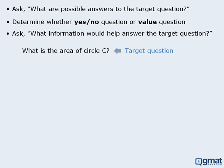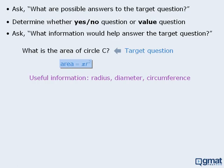Here is another example. The target question asks: what is the area of circle C? Since the formula for the area of a circle is pi r squared, where r is the circle's radius, it would be useful to know the radius of the circle, or perhaps the diameter. Also, if we were given the circumference of the circle, we would be able to determine its radius and subsequently its area. There are several pieces of information that might help us find the area of a given circle. The goal here is to simply identify some information that might help us gain some insight into the question.